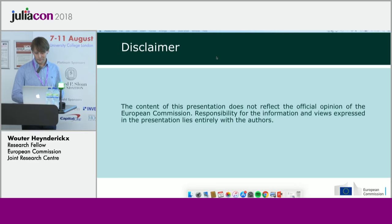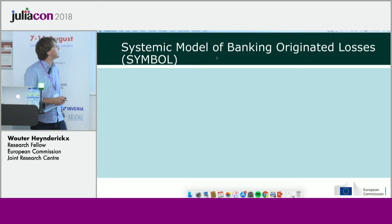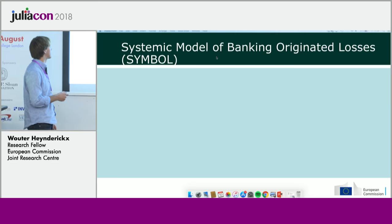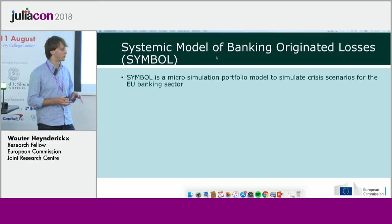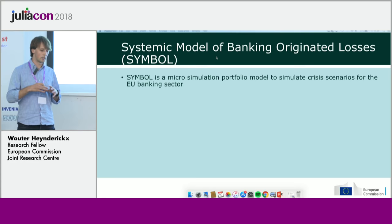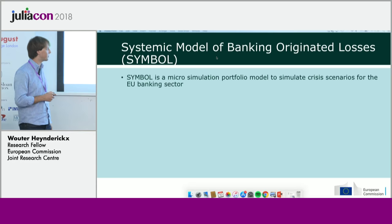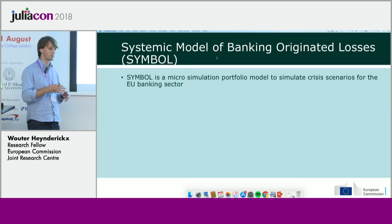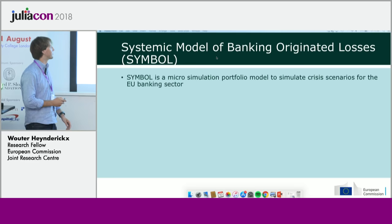Now I will talk about the model itself. The systemic model of banking originated losses is called SYMBOL for short. SYMBOL is a micro-simulation portfolio tool that simulates bank losses for the whole EU banking system — similar to what the keynote speaker of Aviva described, but we simulate credit risk over the entire EU banking sector.